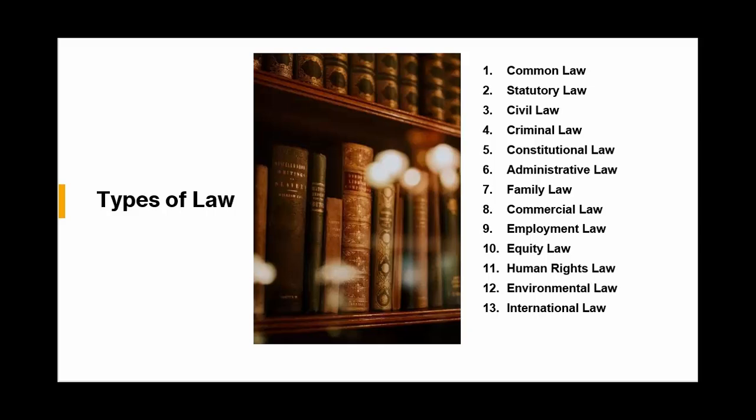Number five: Constitutional law — governing the organisation and functioning of the state and its institutions, it addresses the powers of government bodies, human rights, and constitutional interpretation. Number six: Administrative law regulates the actions of administrative agencies of government, covering regulations, rulemaking, and enforcement of regulatory agendas. Number seven: Family law relates to family relationships including marriage, divorce, child custody, and adoption. Number eight: Commercial law governs business and commercial transactions, encompassing contracts, sales, commercial paper, agency, and partnerships.